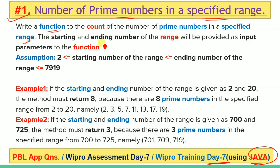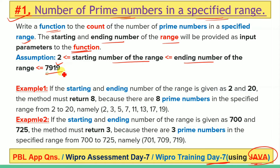The starting and ending number of the range will be provided as input parameters to the function. A constraint for this question is given: 2 is less than or equal to the starting number of the range, which is less than or equal to the ending number of the range, which is less than or equal to 7919. Some examples are given. The first example: if the starting and ending number of the range is given as 2 and 20, then the method must return 8.